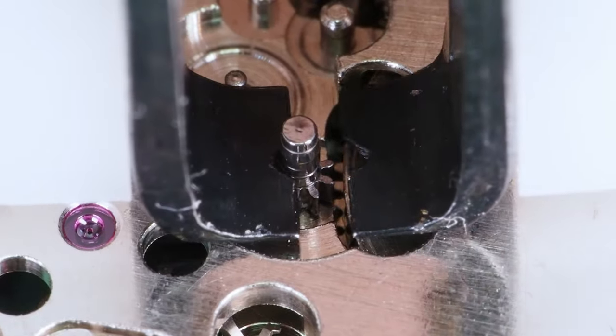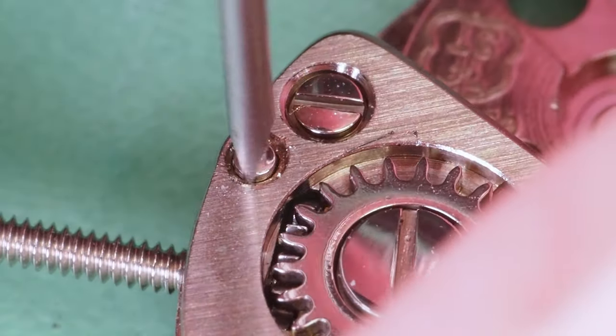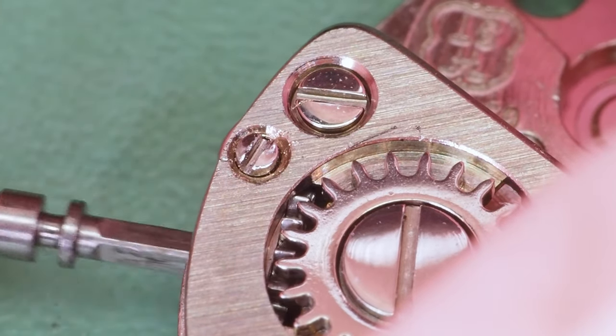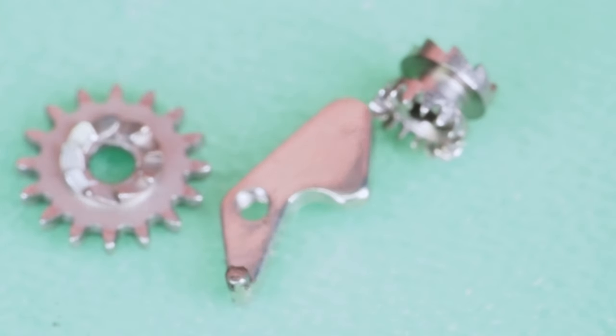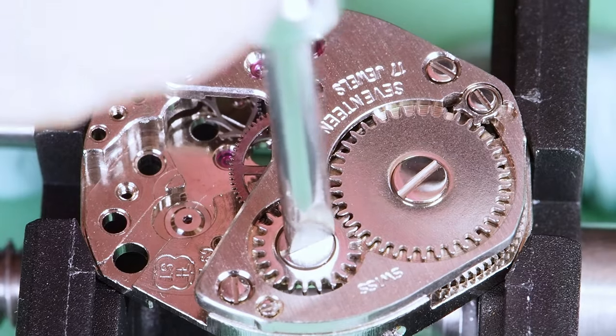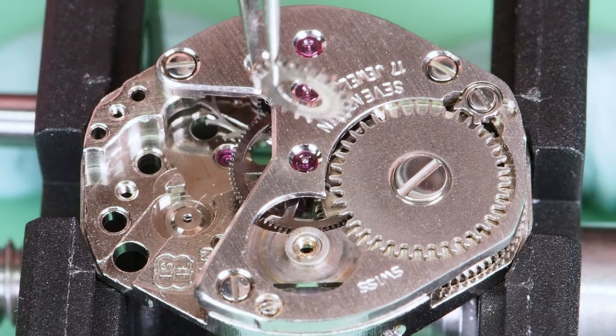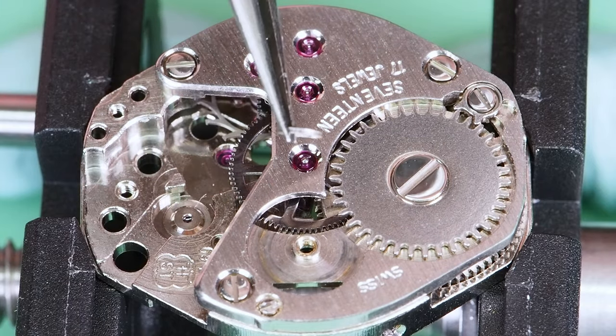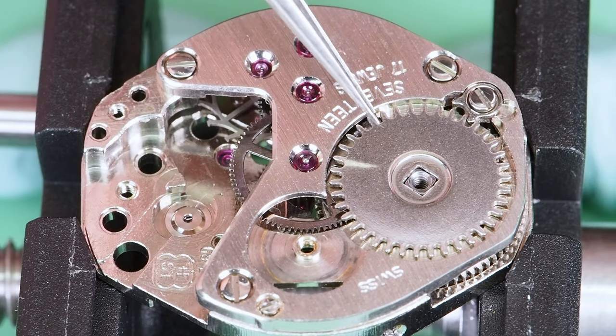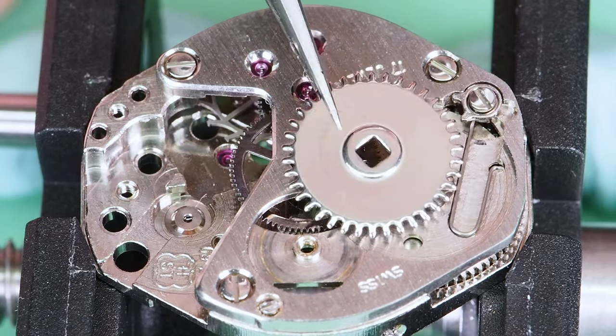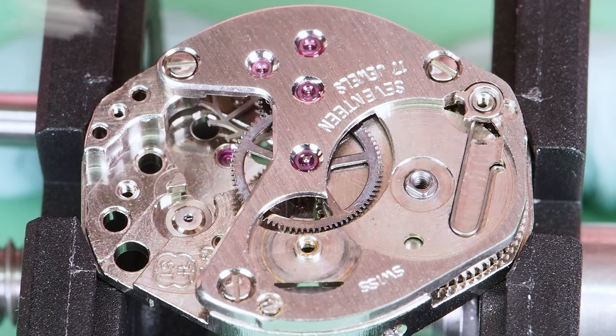Why on earth did Bergeon stop making the cannon pinion remover that removes cannon pinions that are less than 1 mm in diameter? It's beyond me. Now I can fully unscrew the setting lever screw, remove the stem and let the sliding clutch, winding pinion and the setting lever drop on the mat. As with most movements, the crown wheel screw is reverse threaded. The crown wheel and the crown wheel washer. The ratchet wheel screw. The ratchet wheel. The click screw. The click.